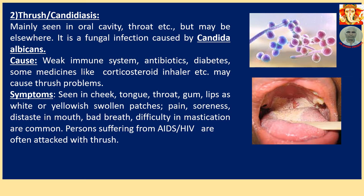Number 2: Thrush or Candidiasis. Mainly seen in the oral cavity, throat, etc., but may be elsewhere. It is a fungal infection caused by Candida albicans. Please look at the image of Candida albicans on the right-hand side — this is a microscopic view. Cause: Weak immune system, antibiotics, diabetes, and some medicines like corticosteroids and inhalers may cause thrush problems.